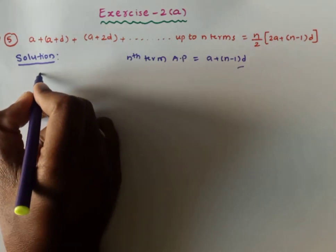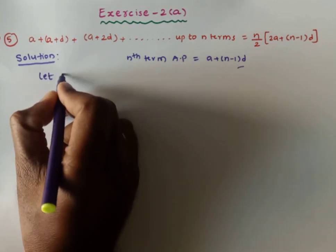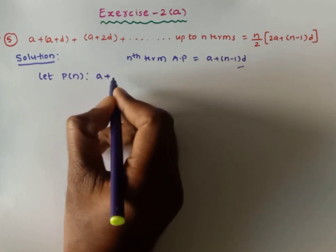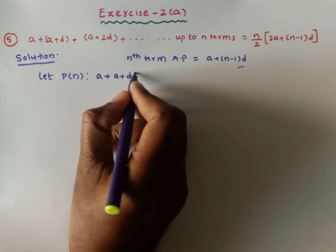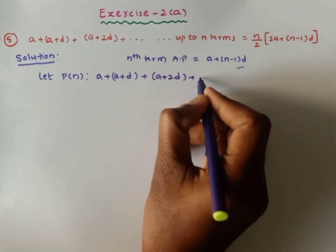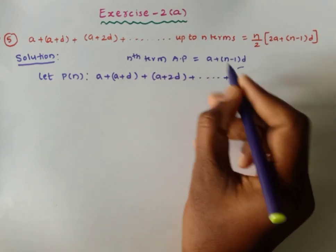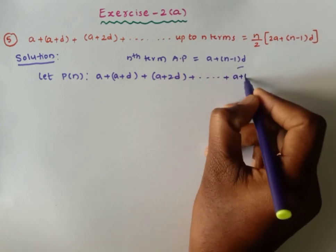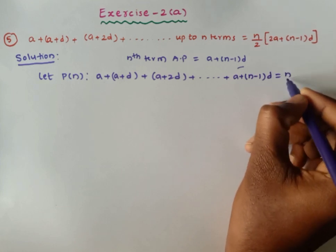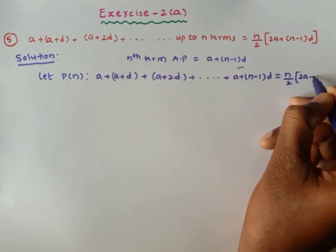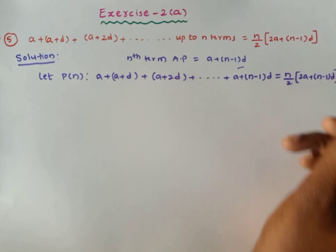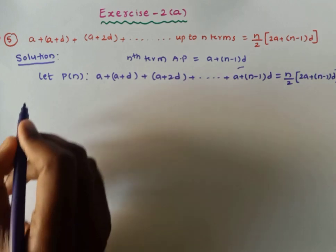Let P(n) be the given statement: a + (a+d) + (a+2d) + ... + (a+(n−1)d) = n/2 × (2a + (n−1)d).